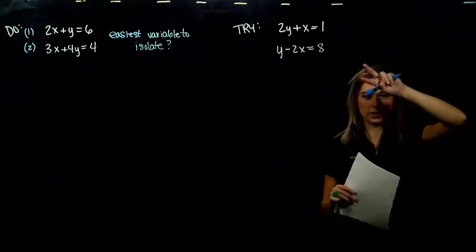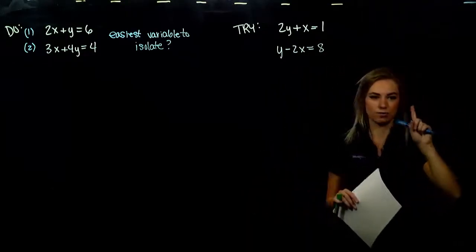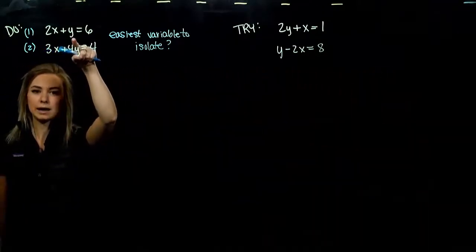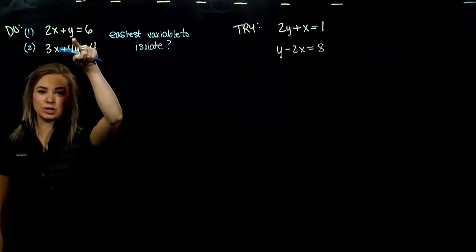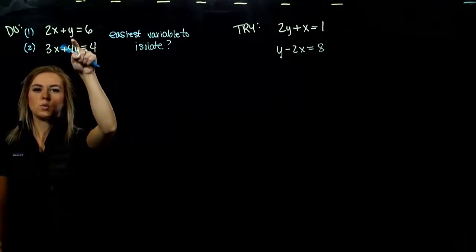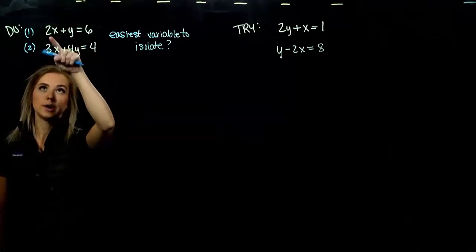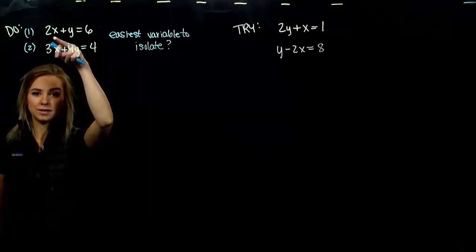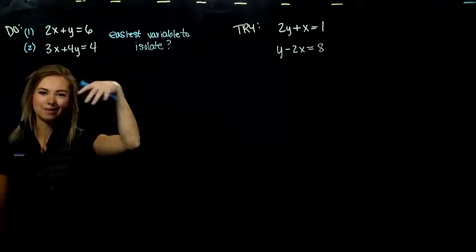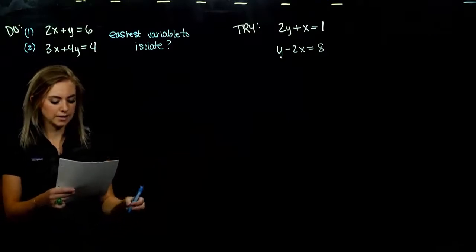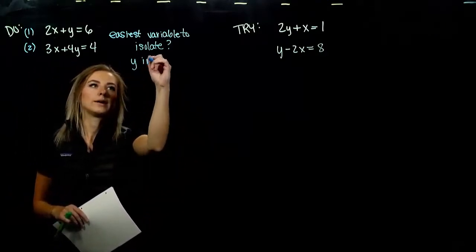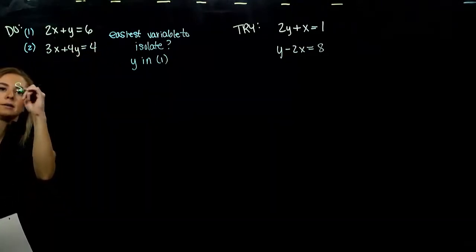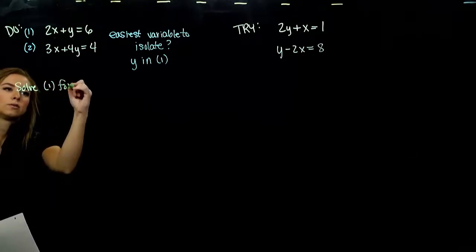Looking at the two equations: do we have a variable with a coefficient of 1? In equation 1, x has coefficient 2 — that's out. But y is already singular; we only have one of them. So solving for y in equation 1 is the easiest route, because all we need is subtraction to get it alone. You could solve for x, but you'd have to subtract and then divide — a bit more work. So our easiest variable to isolate is y in equation 1.